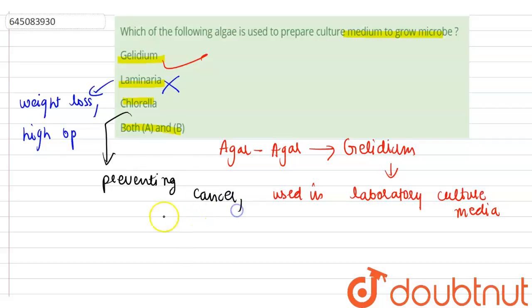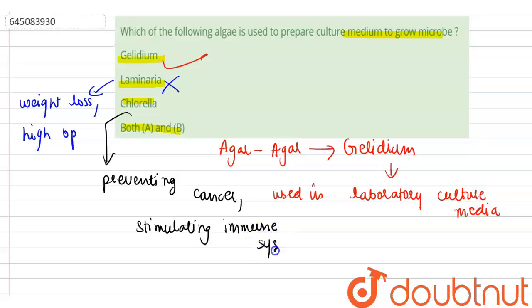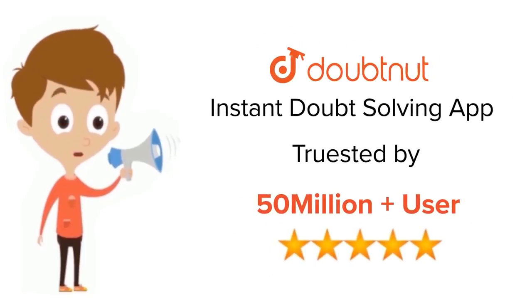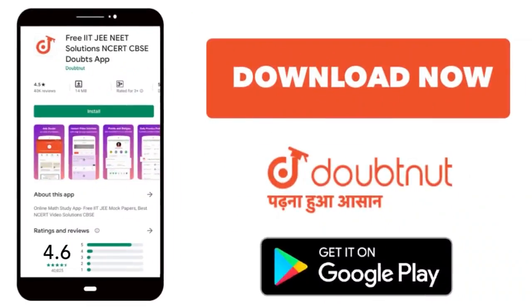Chlorella is also used for stimulating the immune system. So the correct option is gelidium. Thank you. For class 6 to 12, IIT JEE, and NEET level — trusted by more than 5 crore students — download the DoubtNut app today.